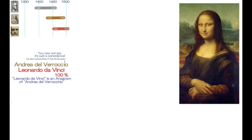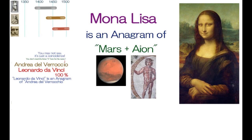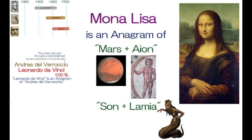Do you know this fact? The name of Mona Lisa is an anagram of Mars and Iron, god of eternity of time. And it is also an anagram of Maria's son, or Ramia's son as well.